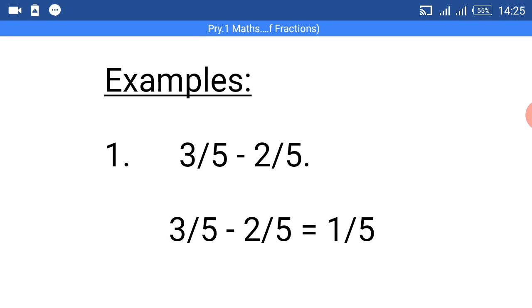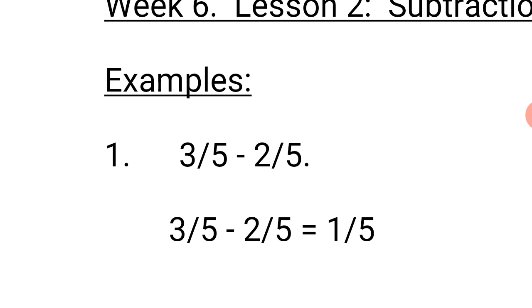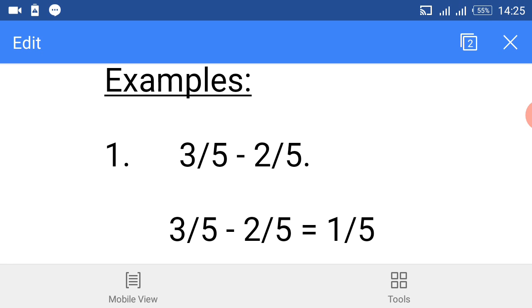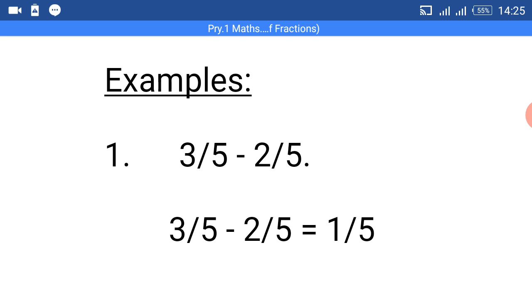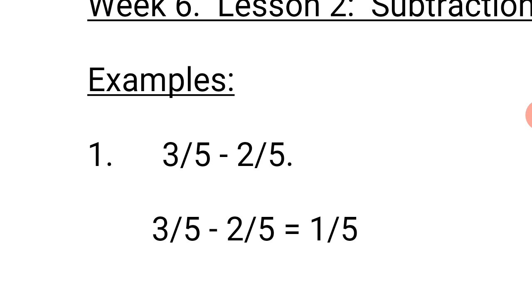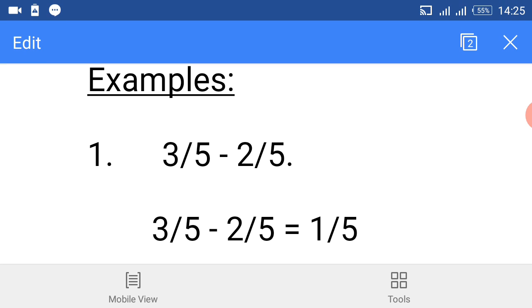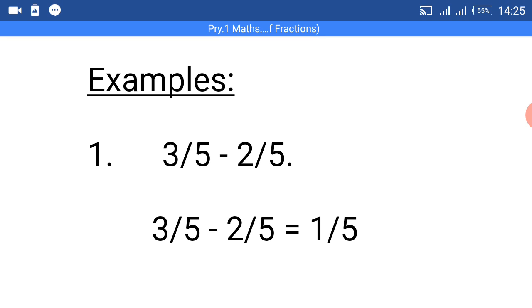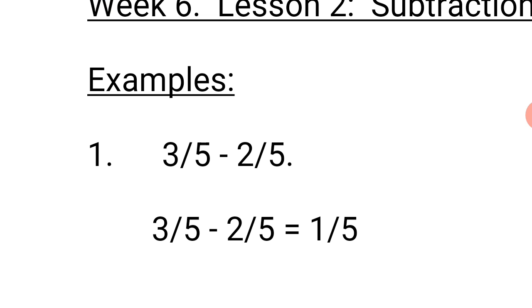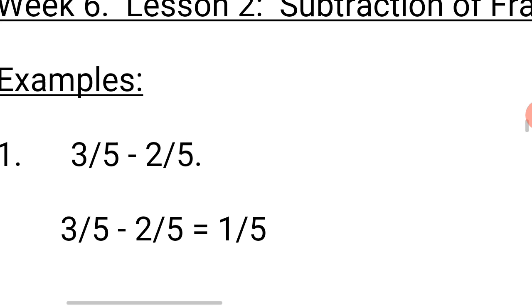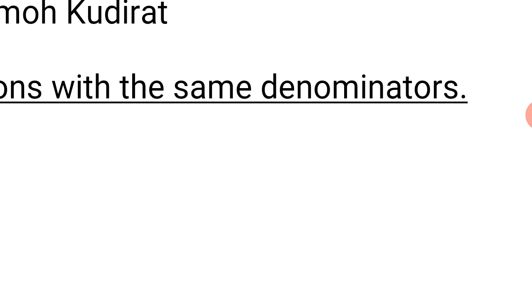The first example says 3 over 5 minus 2 over 5. 3 over 5 is a fraction, and 2 over 5 is also a fraction. 3 is called the numerator, and 2 is also called the numerator, because they are both written on top of 5. So, 5 and 5 are both called denominators. We have two denominators, but the two denominators we are having are the same.